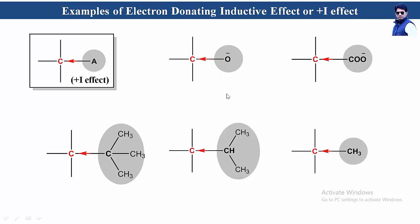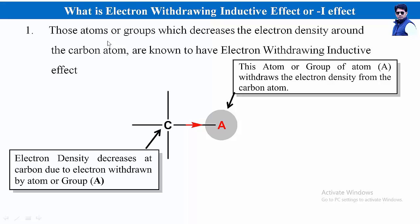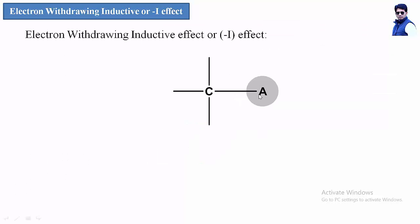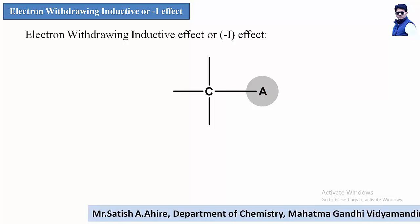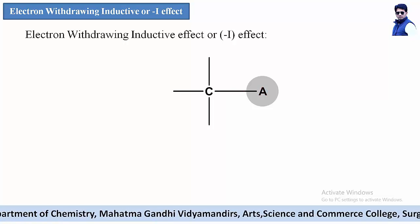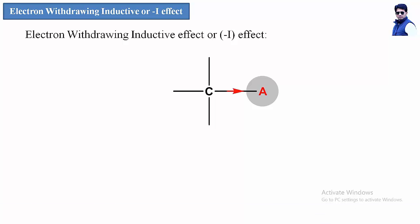Now we study the electron withdrawing inductive effect or minus I effect. This effect is exactly opposite to the electron donating inductive effect. In the structure with a bond between A and carbon, if atom A withdraws electron density from the carbon atom, the electron density around carbon decreases while around atom A it increases. The red color in the diagram represents this increase of electron density around atom A.